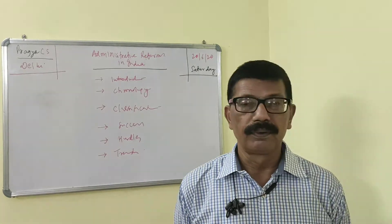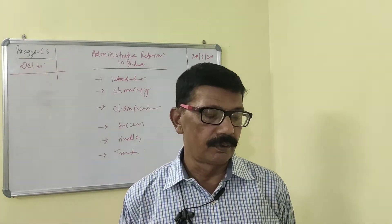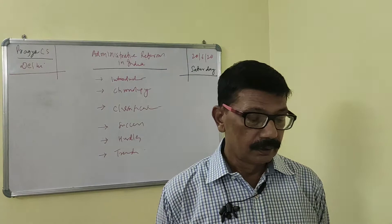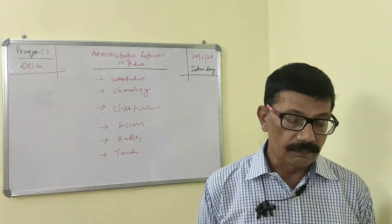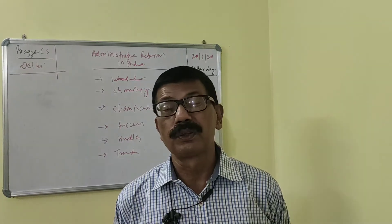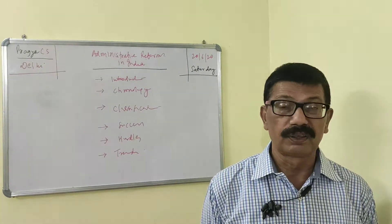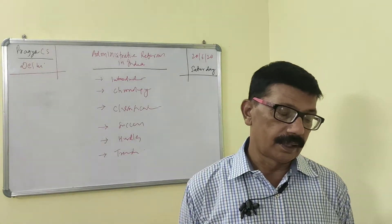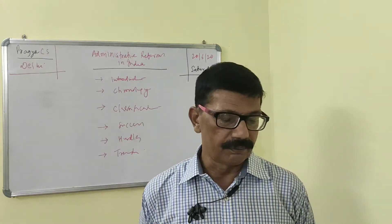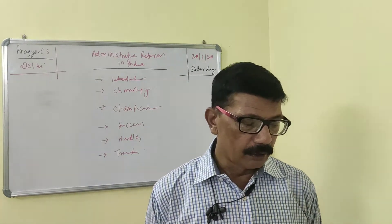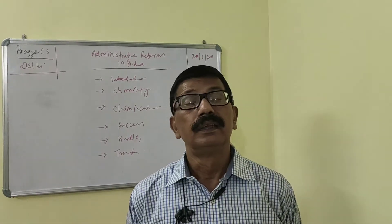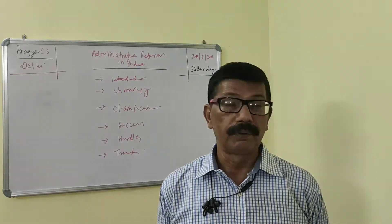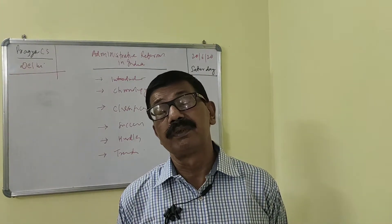The First Pay Commission in 1946 was constituted and gave its report in 1947 under Chairman Srivaradacharya. In 1948, under the chairmanship of Kasturbhai Lalbhai, an Economy Committee was constituted, which gave measures to control expenditure in various administration departments. In 1949, the N. Gopalswami Ayyangar Committee was constituted, giving recommendations for reorganization of various administrative departments and also for O&M.